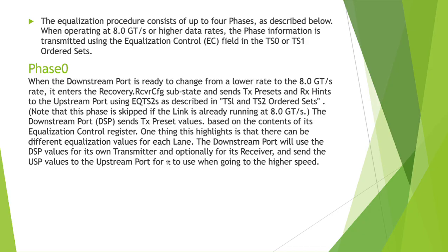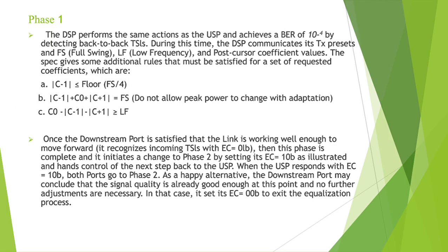Phase 0 exists only for the upstream port (EP), not the downstream port. The reason is: when the RC initiates equalization, the EP needs to determine whether the particular data rate for that equalization is supported. By using phase 0, it checks whether that particular data rate is supported for the equalization, then exits phase 0 and moves to phase 1. When the EP enters phase 1, it receives TH1 data, decodes it properly, and once a bit error rate of 10 to the minus 4 is achieved, it sends EC equal to 01.